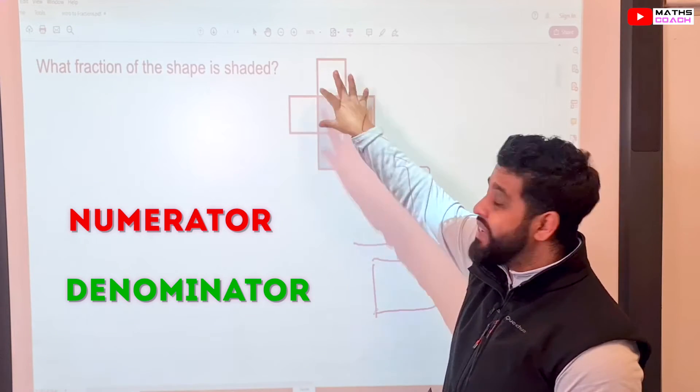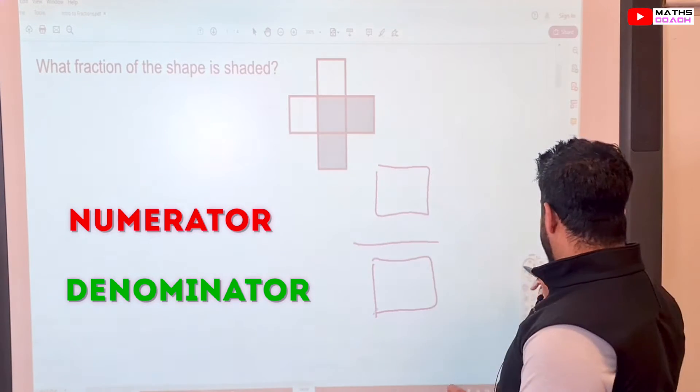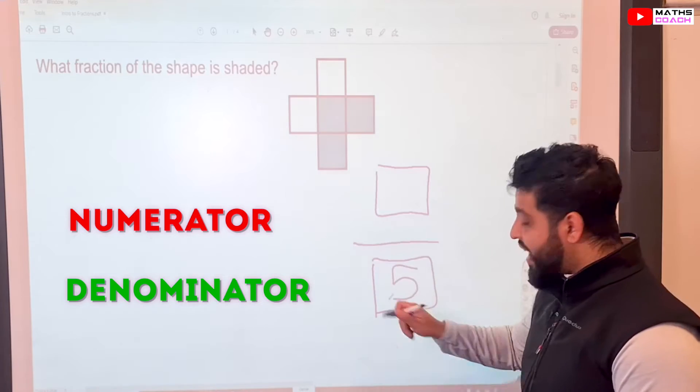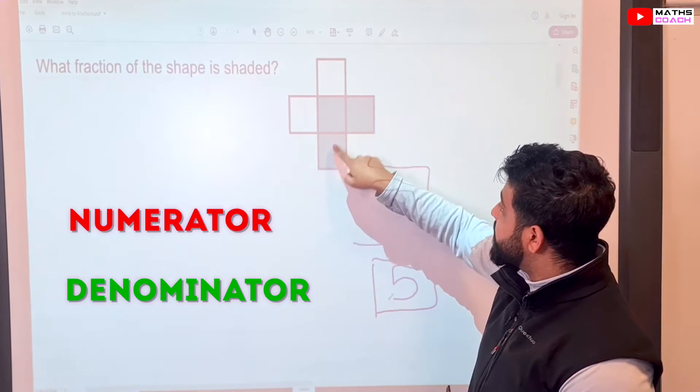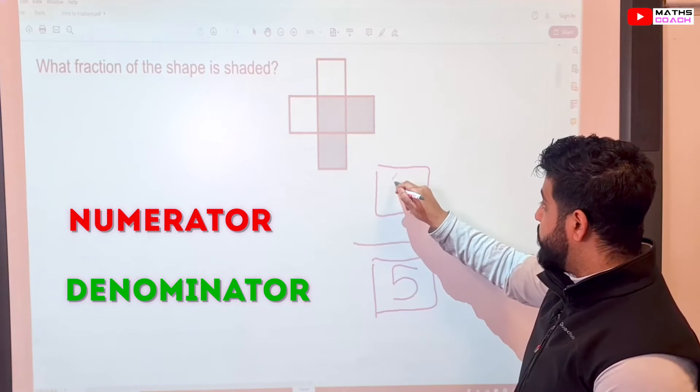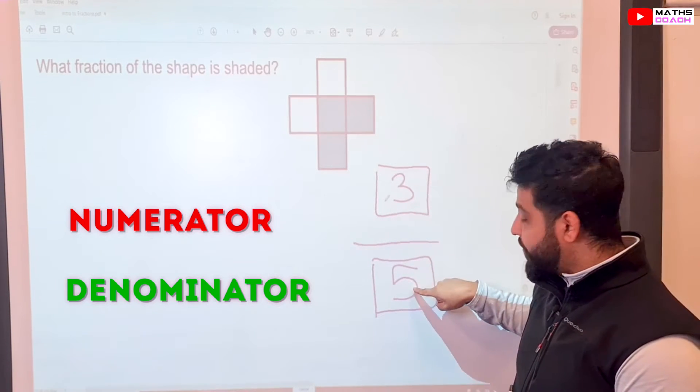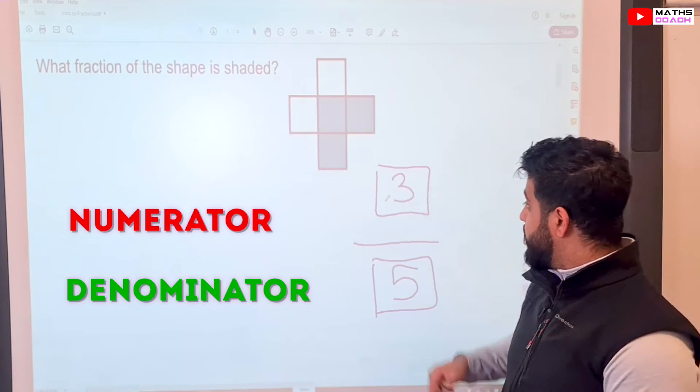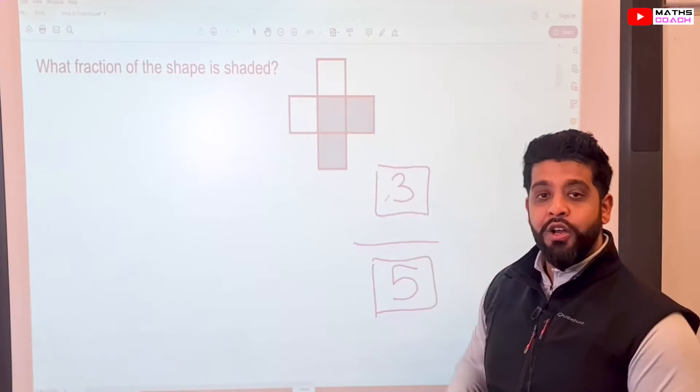There are five equal parts that this shape has been divided into, and that means that out of five parts, we want to know how many parts are shaded. You've got three parts which are shaded, so we'll put the three here. So the three becomes the numerator, and the five is the denominator. So three out of five parts is shaded of this shape.